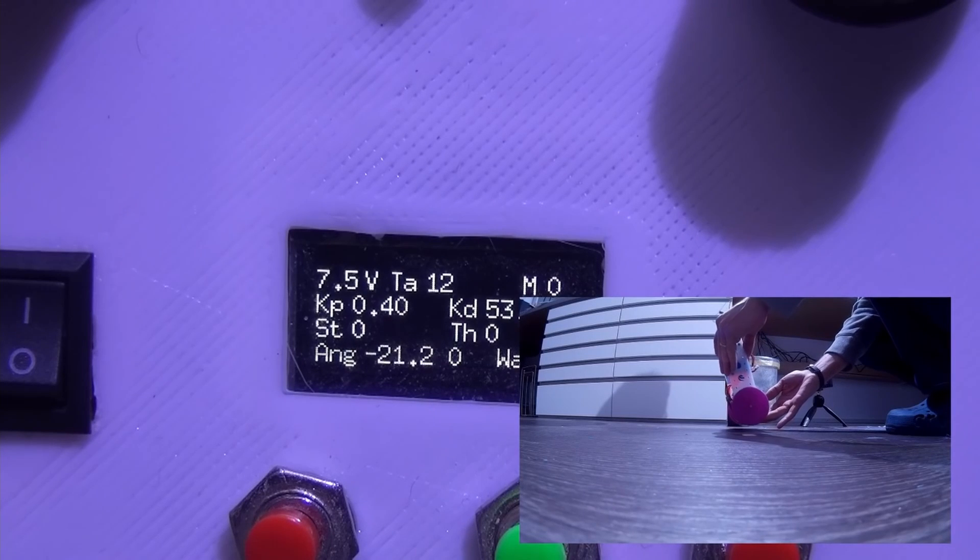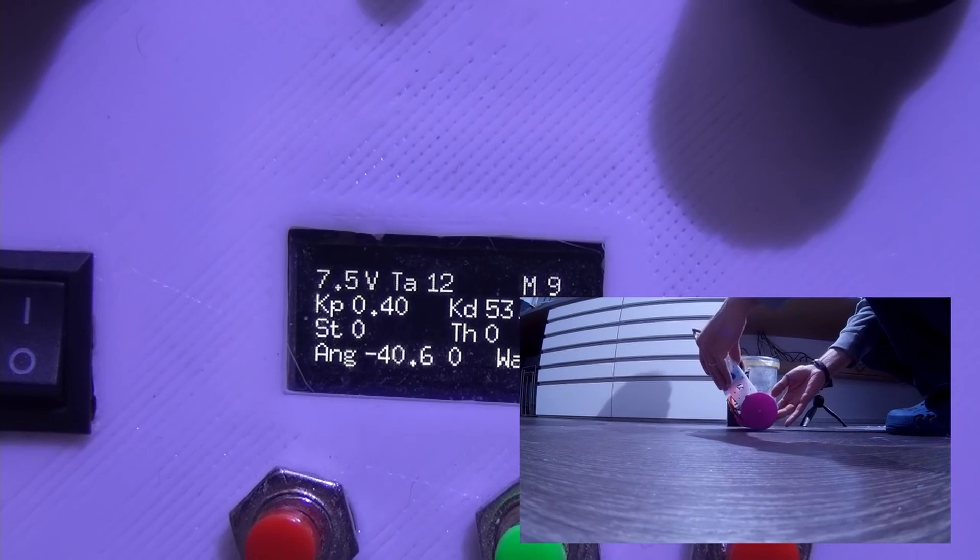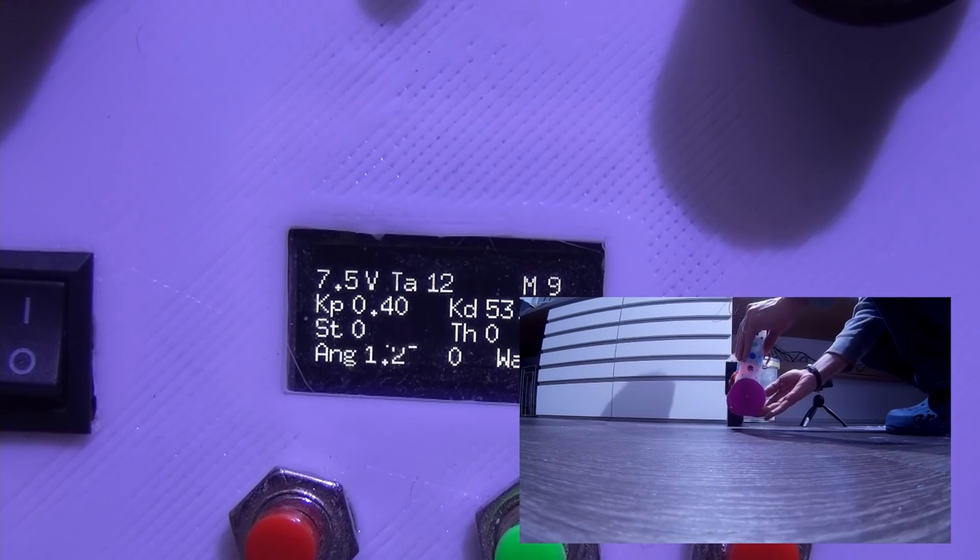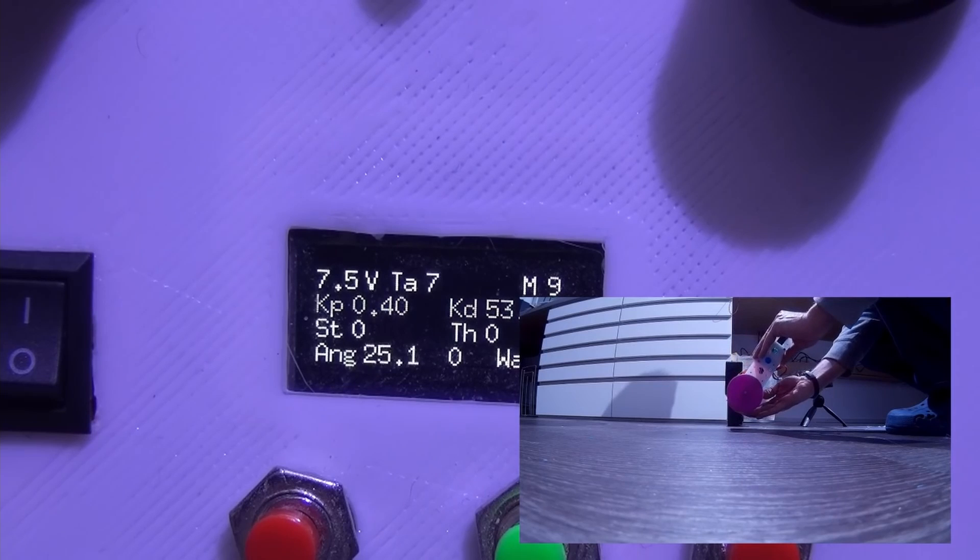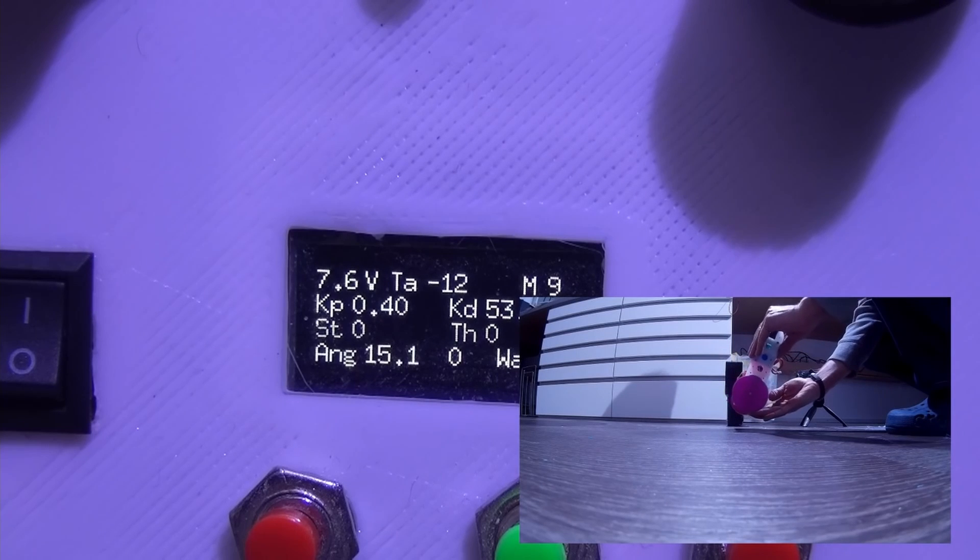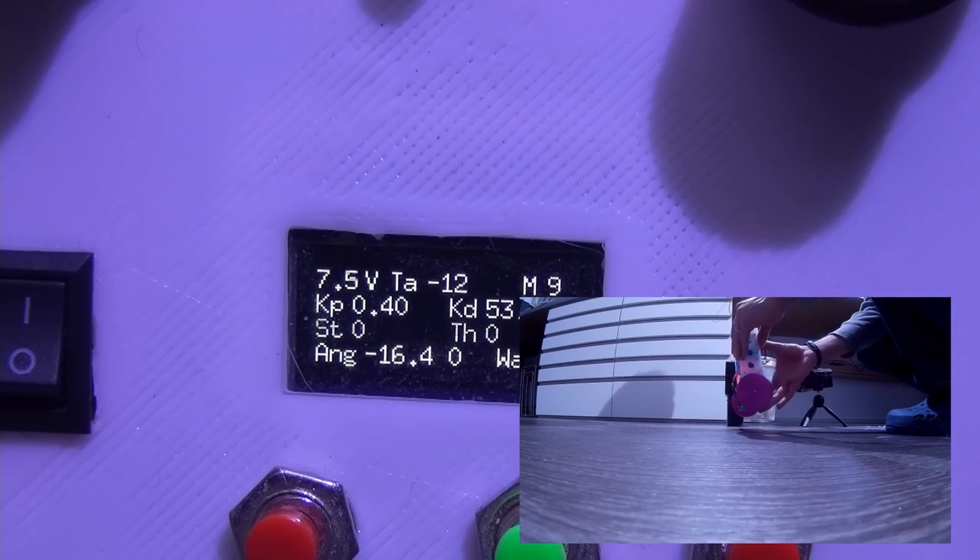The accelerometer can measure the angle of the robot, and the microcontroller uses a PID controller to make sure that the angle is always zero, which means a vertical position.